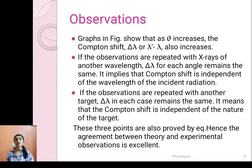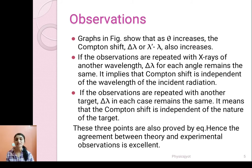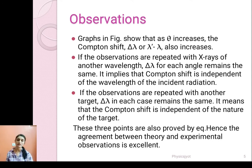It implies that Compton shift is independent of the wavelength of the incident radiation. If the observations are repeated with another target, delta lambda in each case remains the same, meaning the Compton shift is independent of the nature of the target. These points are also proved by the equation of Compton shift, and hence the agreement between theory and experimental observation is excellent in case of Compton effect.